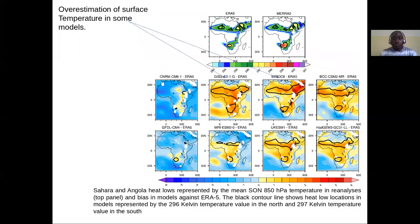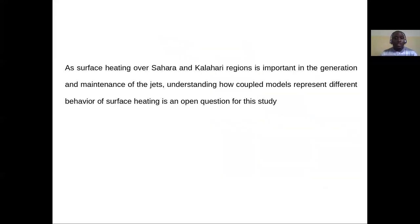We present here surface temperature at 850 hectopascals, and we can clearly see overestimation of surface temperature in some models like GISS and MIROC6. Some models also underestimate the surface temperature, like CNRM and GFDL.